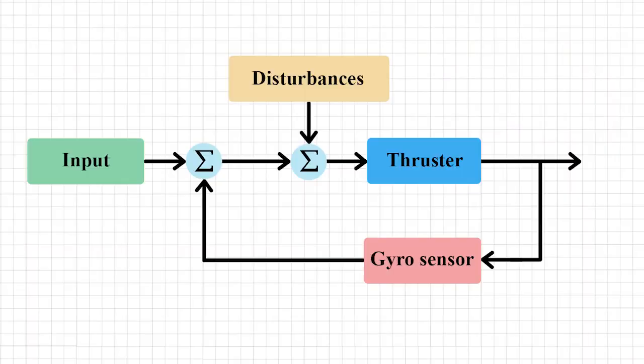On the screen now is a general overview of our system, consisting of the input-output relationship between the gyro sensor and our thruster. The gyro sensor acts as the feedback in this scenario when, in combination with the input and any disturbances into our system, generates an output through the thruster.